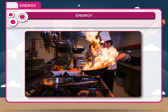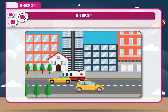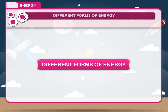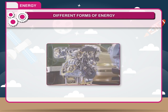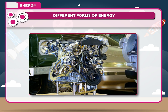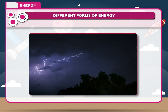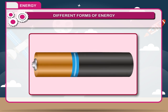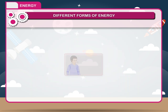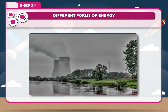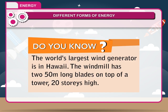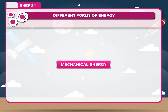Heat energy is used to cook food. Mechanical energy is used to move vehicles, etc. There are various forms of energy in nature: mechanical energy, heat energy, light energy, electrical energy, chemical energy, sound energy, magnetic energy, and atomic energy. The world's largest wind generator is in Hawaii — the windmill has two 50-meter-long blades on top of a tower 20 stories high.